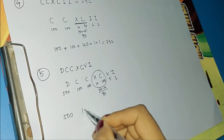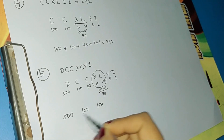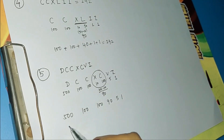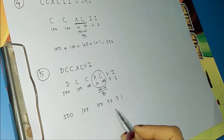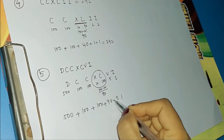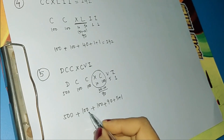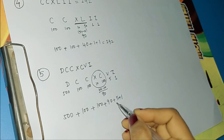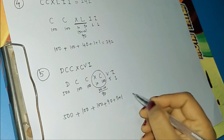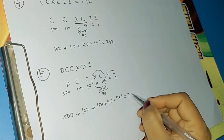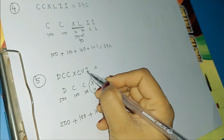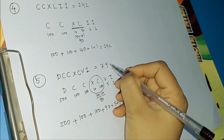Our corrected sequence is now 500, 100, 100, 90, 5, 1 — all in descending order. Adding: 500 plus 100 is 600, plus 100 is 700, plus 90 is 790, plus 5 is 795, plus 1 is 796. So DCCXCVI is equivalent to 796.